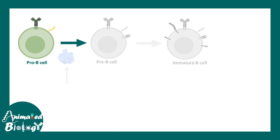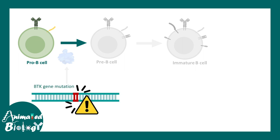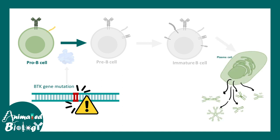In the overall maturation process, BTK takes a very important role. We can now appreciate why BTK gene mutation can lead to a B cell maturation defect or B cell developmental defect. So pro-B cells never become plasma cells in this particular disease, and that is why none of the antibodies are generated.